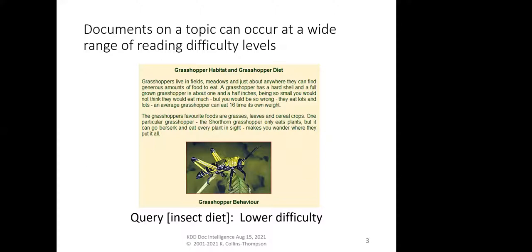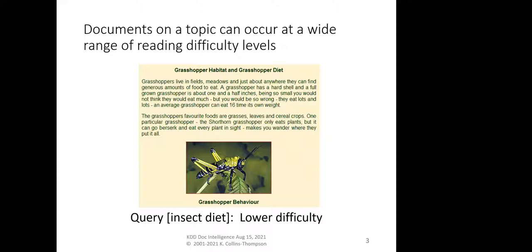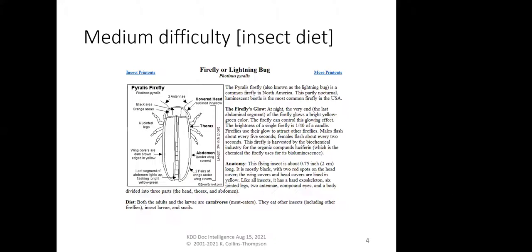As everybody is aware, there are lots of different ways that documents can be difficult. Documents on a topic can occur at a wide range of reading difficulty levels. Some of this research was inspired by an episode with my daughter — when she was seven years old, she came home in tears because she had to do a project on sea urchins and everything she found on the web was too difficult for her to read. That was a pretty good motivation to ask: how could we do a better job at getting the right information at the right reading level?